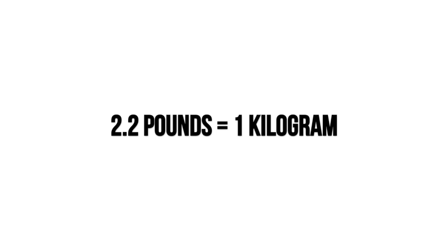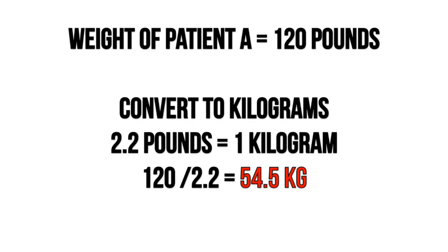The first conversion is pounds to kilograms. The conversion is: 2.2 pounds equals one kilogram. Because I'm a visual learner and I like to give examples, let's look at a scenario. Let's say you have a patient that weighs 120 pounds and you need to convert that into kilograms. All you need to do is divide by 2.2 — the units cancel out and it leaves you with kilograms.